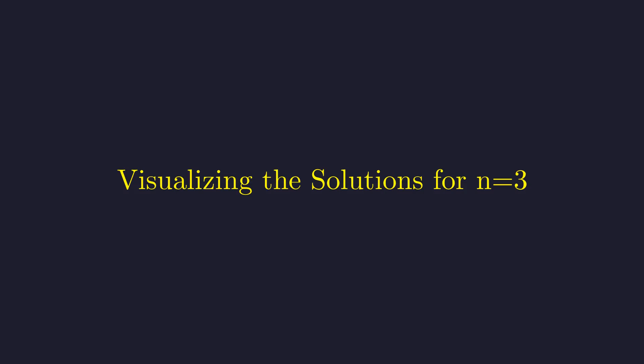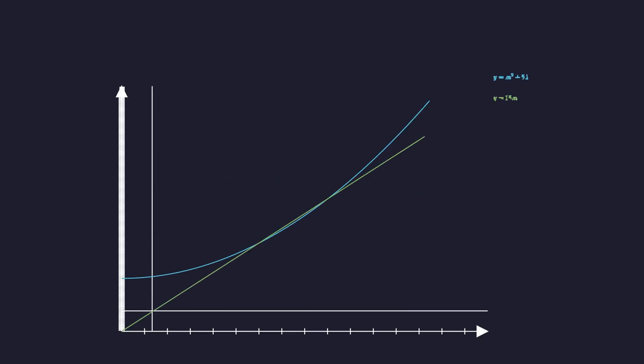Algebra provides the proof, but a graph can provide intuition. For the case n equals 3, the original equation simplifies to m squared plus 54 equals 15m. Plotting the left-hand side, a parabola, and the right-hand side, a line, reveals their intersection points. These points occur at m equals 6 and m equals 9, visually confirming the integer solutions derived algebraically.